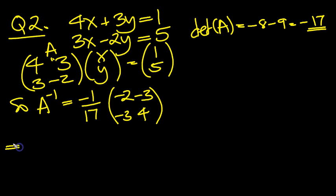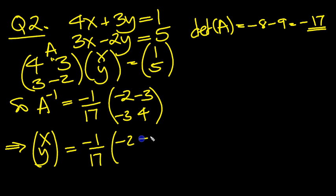And so that implies then the solution will be x, y. We'll equal A to the minus 1 times by the 1 and the 5. There we are. So what have we got?